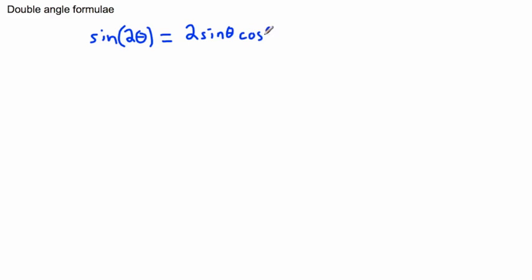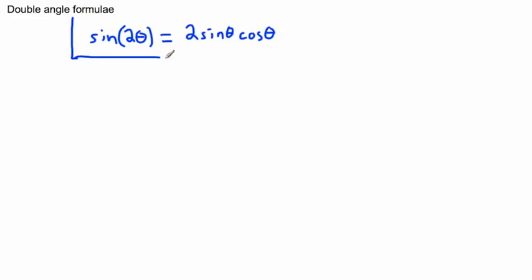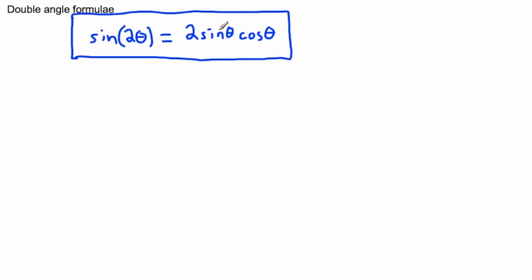This tells you that if you're asked for sine of twice an angle, you can skip right to this. Instead of actually figuring out what the angle is and then taking twice that value and then taking the sine of it, you can just say sine of twice an angle is two times sine of the single angle times cosine of that single angle.